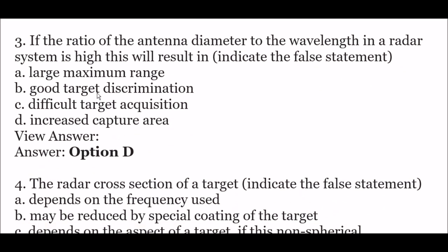Next question: if the ratio of the antenna diameter to the beam length in a radar system is high, indicate the false statement — option A: large maximum range, option B: good target discrimination, option C: difficult target acquisition, option D: increased capture area. The right answer is option D — increased capture area. This is the false statement.